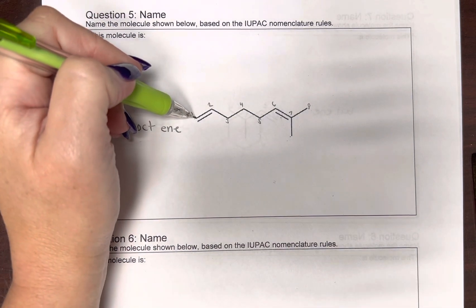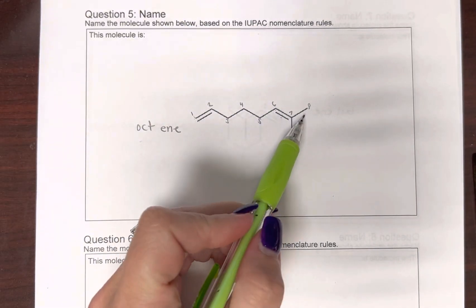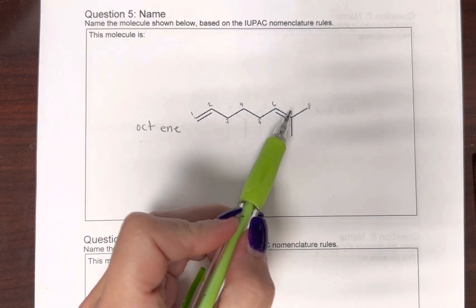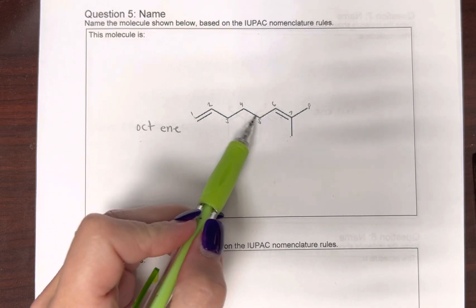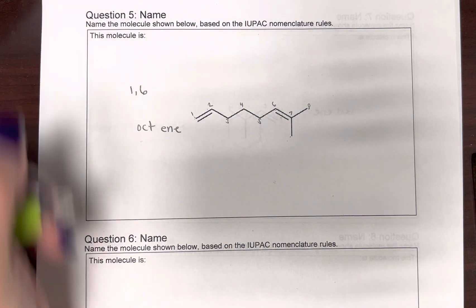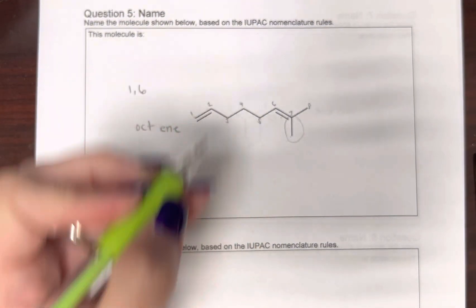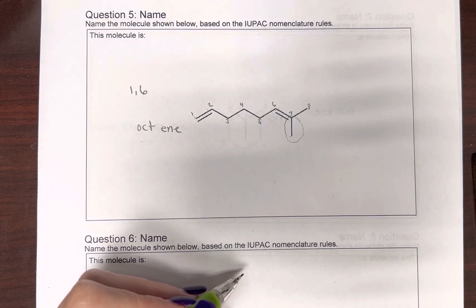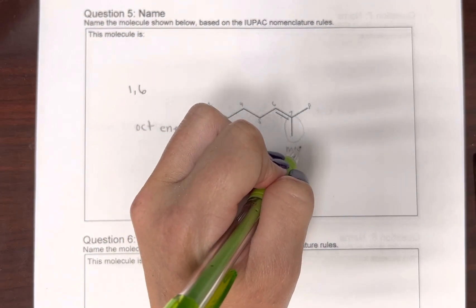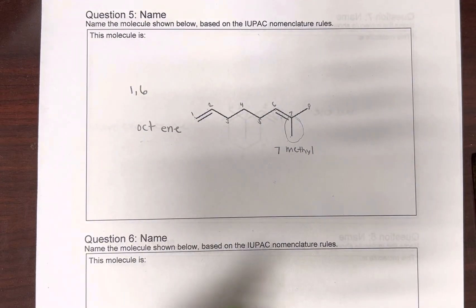If I start this way, my double bond starts at one and it starts at carbon six. If I go the other way and say this was carbon one, it wouldn't start until carbon two, then three, four, five, six, seven. So one and six is better than two and seven. So we're going to have one and six. We also have an extra methyl group on carbon seven.